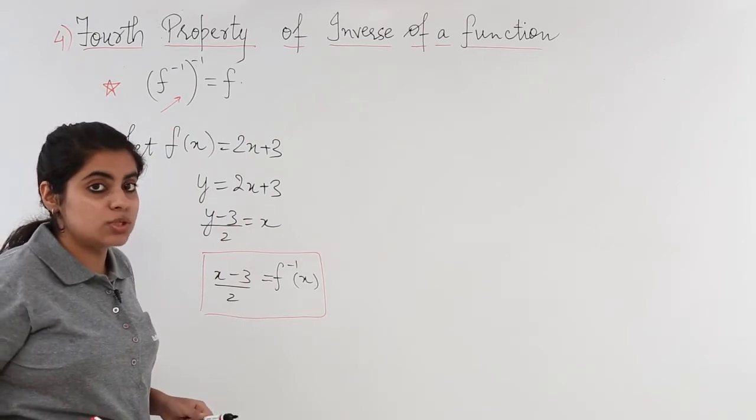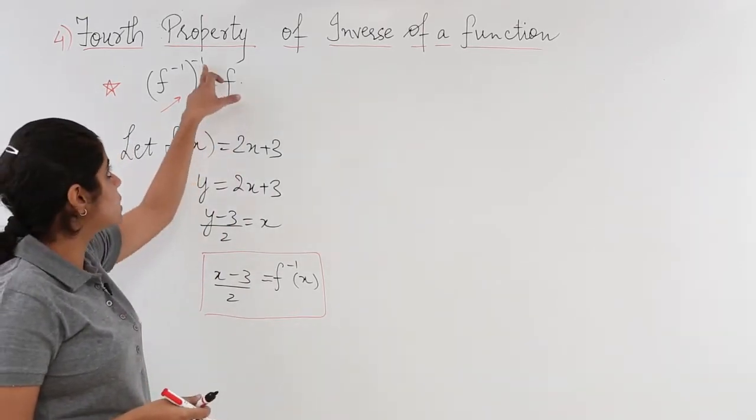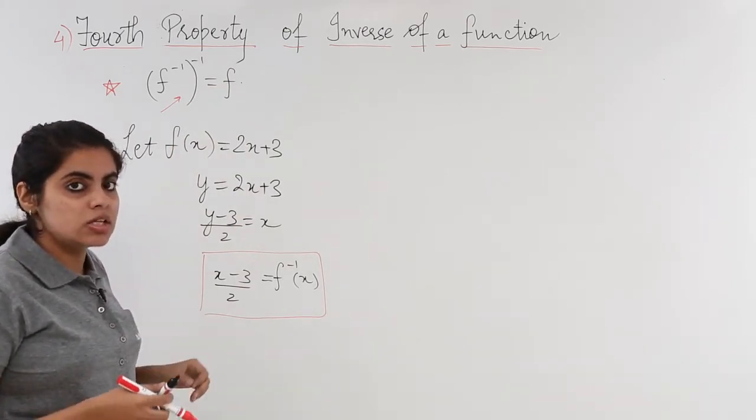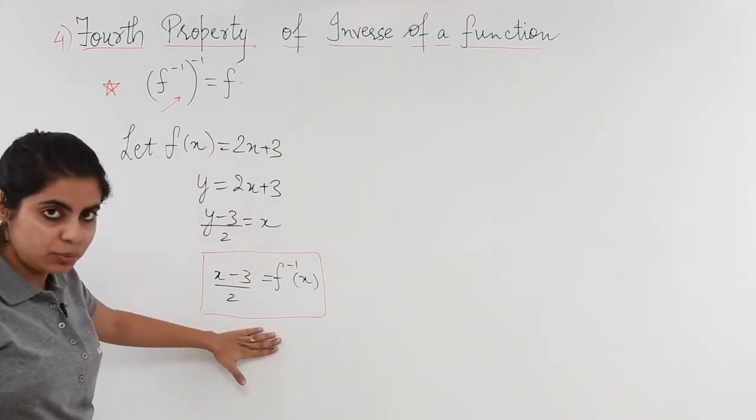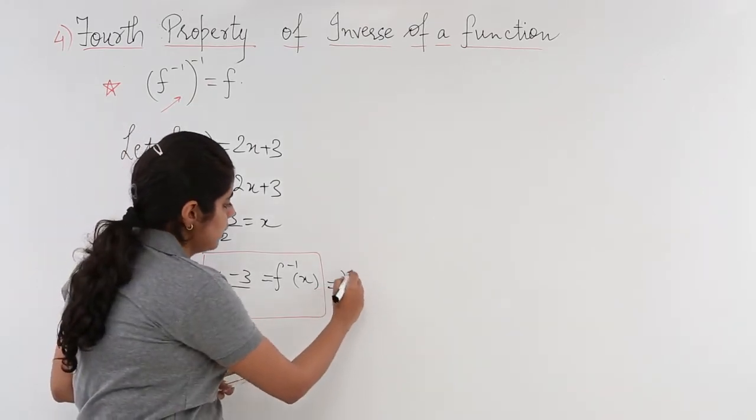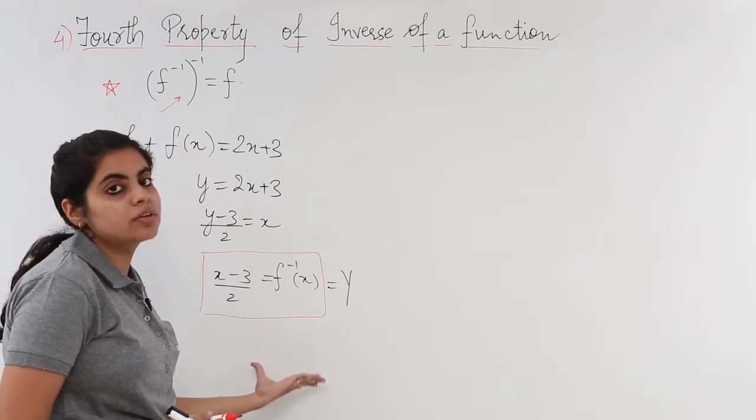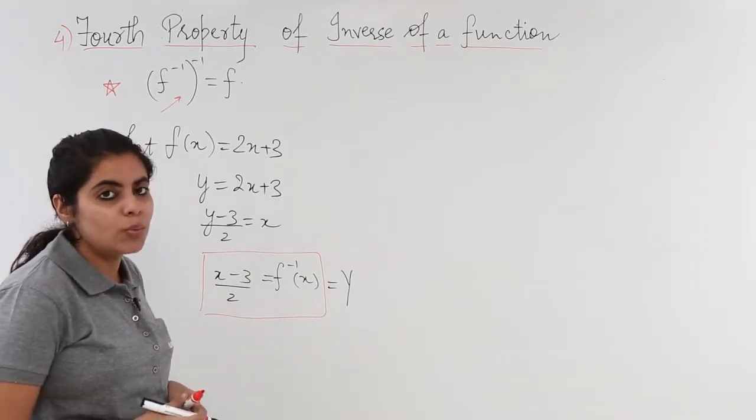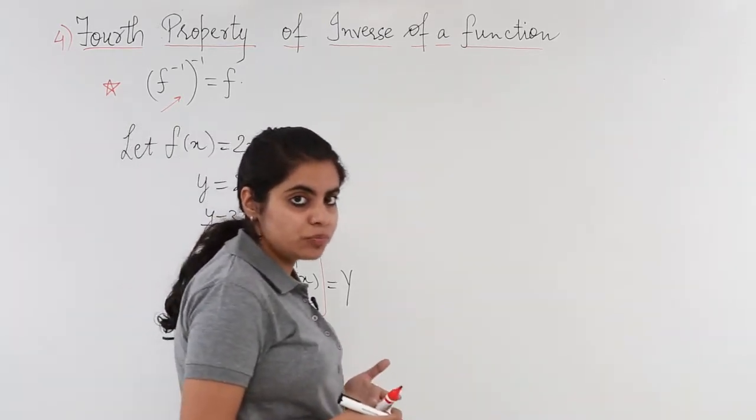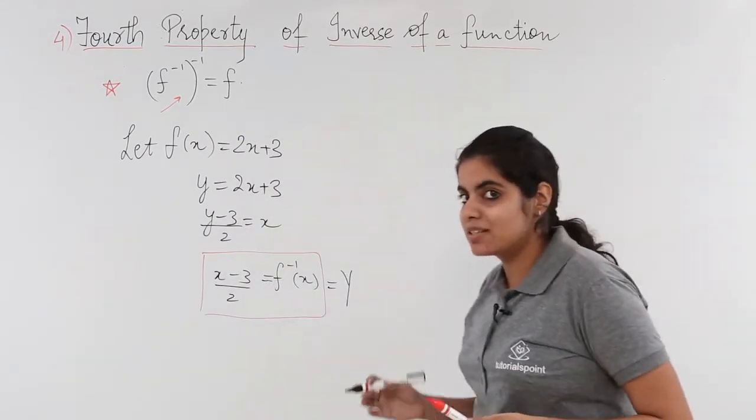But my task was not only this - I had to find the inverse again. There is one more inverse to take. After finding f inverse of x, I have to compute the inverse of this function, which is (x - 3)/2. Let's see how to find the inverse of (x - 3)/2.